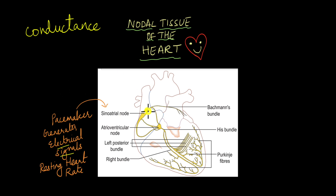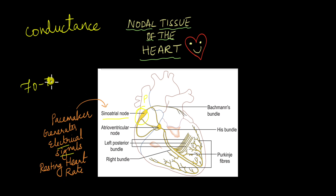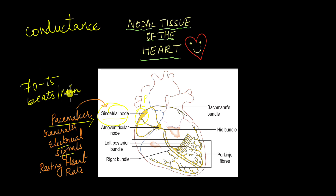There are several nodal tissues in the heart. The largest and most powerful is the sinoatrial node, located in the right atrium very close to the pulmonary artery. The sinoatrial node generates electrical signals that maintain the resting heart rate — for example, around 70 to 75 beats per minute. This is why it is known as the pacemaker of the heart, as it sets the pace of the heartbeat. If the sinoatrial node fails, an artificial pacemaker is implanted to keep the heart beating properly.